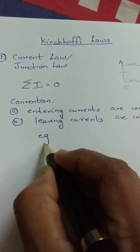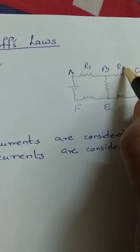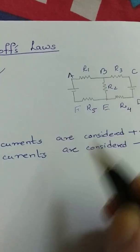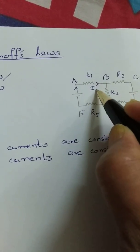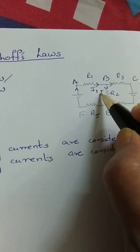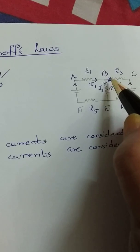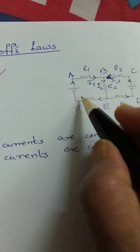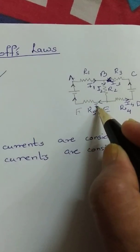Let us take an example. Suppose this resistance is R1, this is R3, this is R2, R4, and R5. Let us note down the direction of current. This current is I1, it enters R2 here, so this is I2. This one here is I3. This current moves here, so this one is I4 and this one is I5.